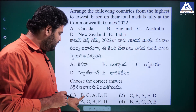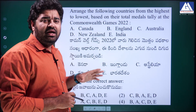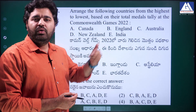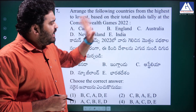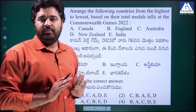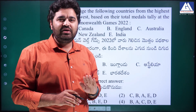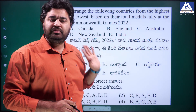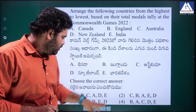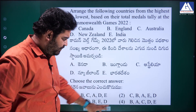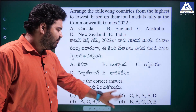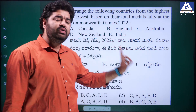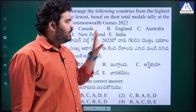Using the elimination method: if you know India was fourth and Australia was first, check which options place these correctly. Any option that puts India outside fourth position can be eliminated. Similarly, any option that doesn't place Australia first can be eliminated. This narrows down to a 50-50 choice, and with Australia confirmed as first, you can pick the correct answer confidently using elimination.